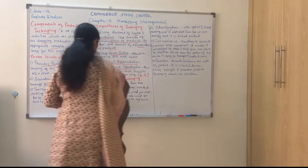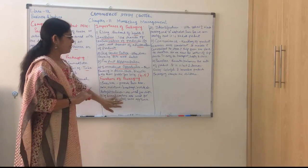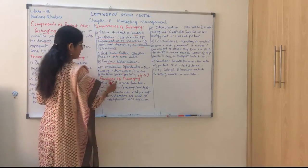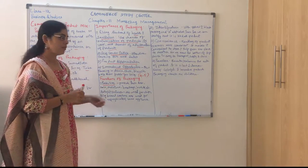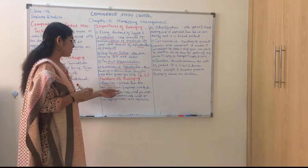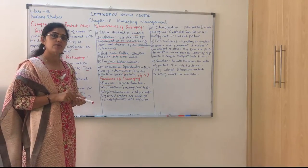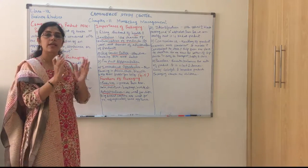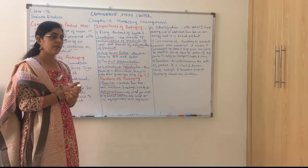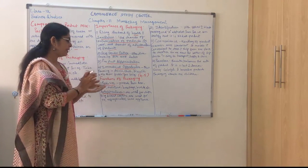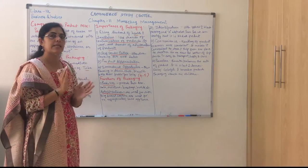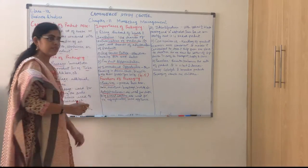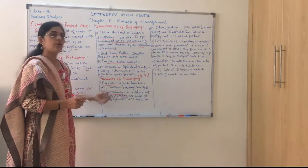Now let us see the functions of packaging. The first function is protection. We need to protect our product from sun, rain, external weather, moisture, breakage, and insects. Airtight containers are used for chips and biscuits so they remain fresh for a longer period. Big cartons with thermocol are used for home appliances like TVs and refrigerators to prevent damage during storage and transport.